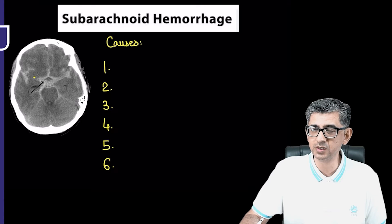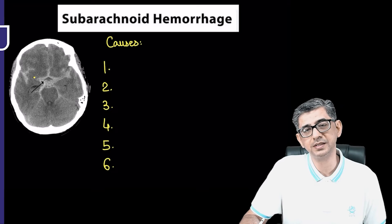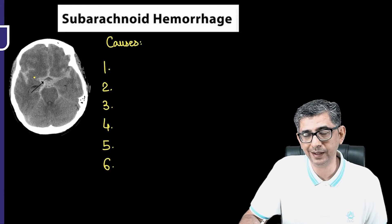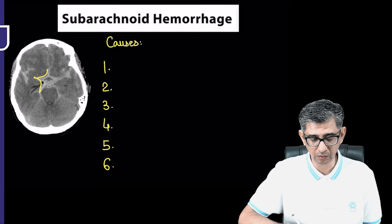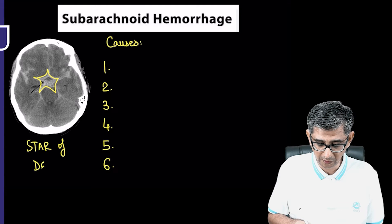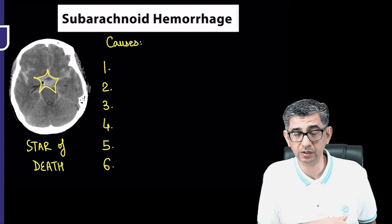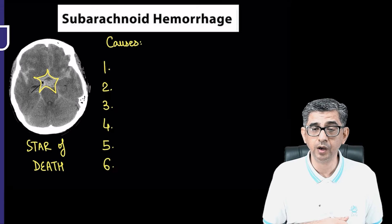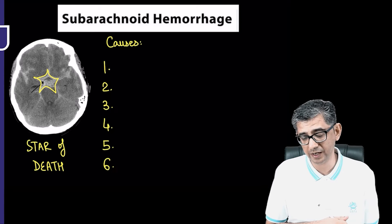Before describing the usual causes responsible for it, I would like to draw your attention to a very classical neuroradiological finding encountered in subarachnoid hemorrhage. You can see in this non-contrast CT head the presence of blood in the basal cisterns, which gives rise to an appearance referred to as the 'star of death.' Subarachnoid hemorrhage can have as much as a 35% mortality prior to hospitalization — many of these patients can die suddenly.